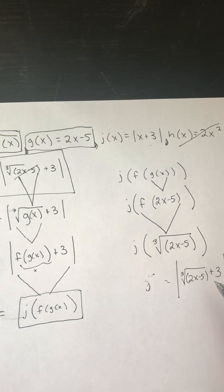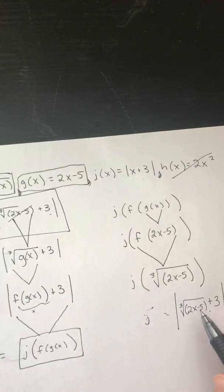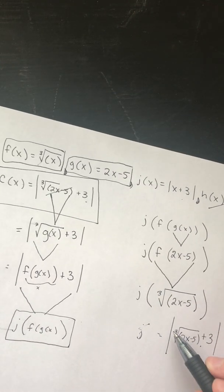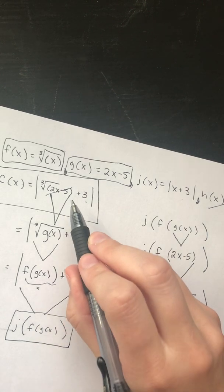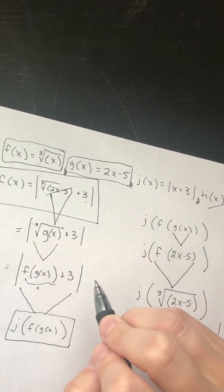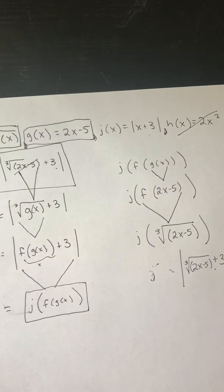So, ignore that. We want this to equal what we originally had. So we compare them. If you can see, we have our gross third root of the 2x minus 5. We have that plus 3. It's all in the absolute values. So that's how we know that we did this correctly.